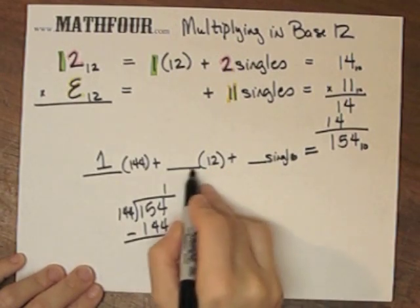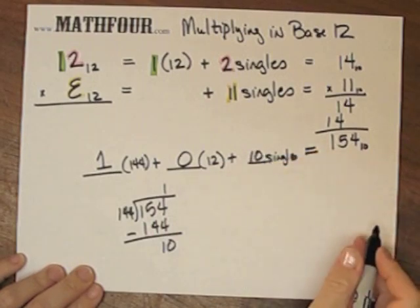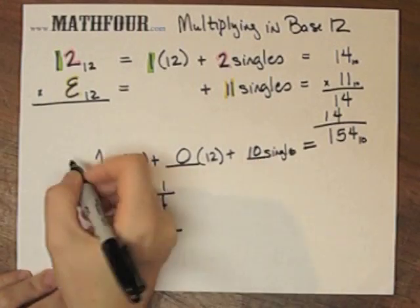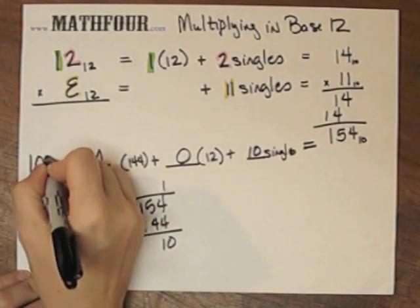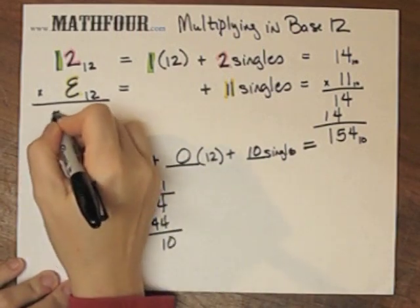Well, that's no sets of 12 and 10 singles. So this is 1, 0, T base 12, and that's our answer.